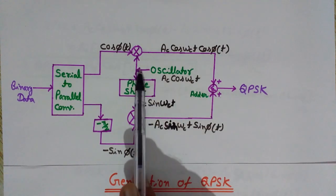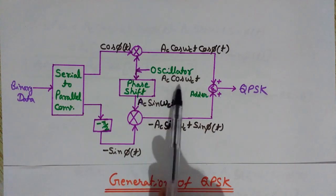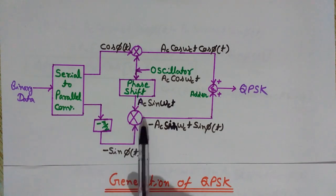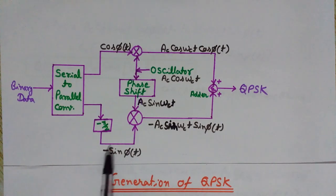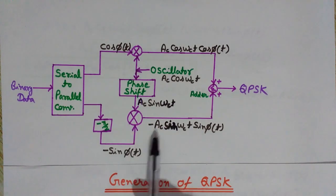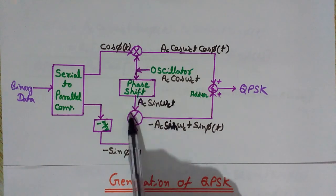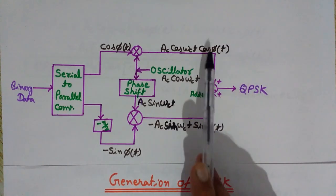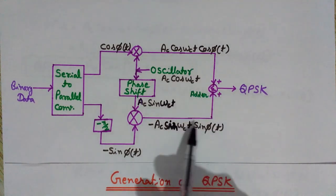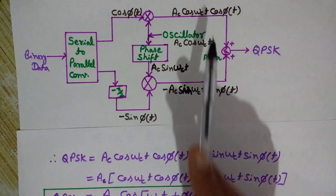The oscillator's output is also provided to a phase shifter, which converts Ac·cos(ωct) to Ac·sin(ωct). A second multiplier takes −sin(φ(t)) and Ac·sin(ωct) as inputs, giving the output −Ac·sin(ωct)·sin(φ(t)). These two multiplier outputs are then added together to produce the QPSK signal.